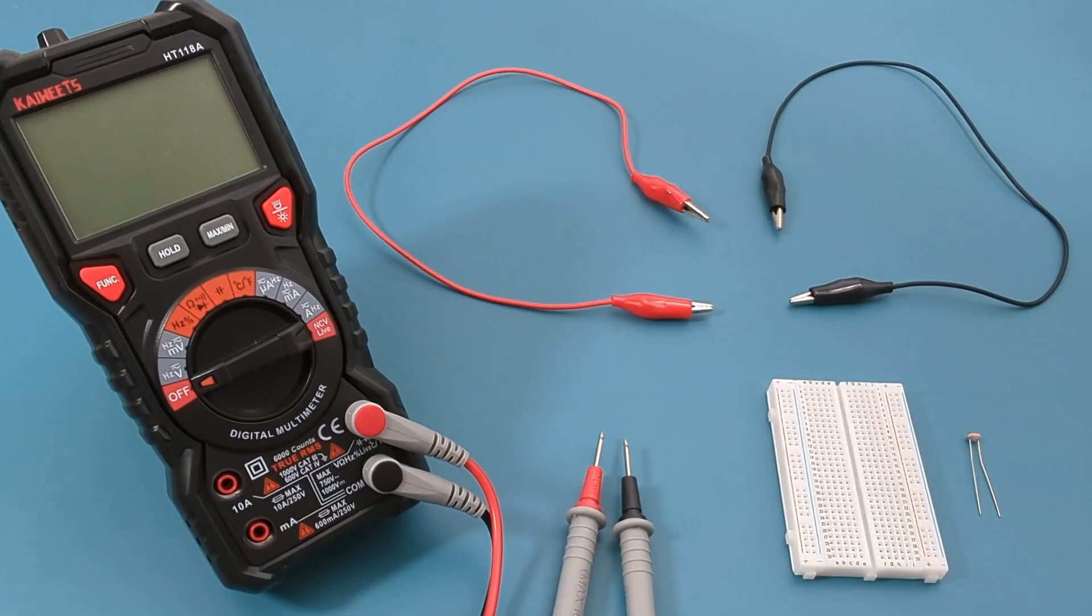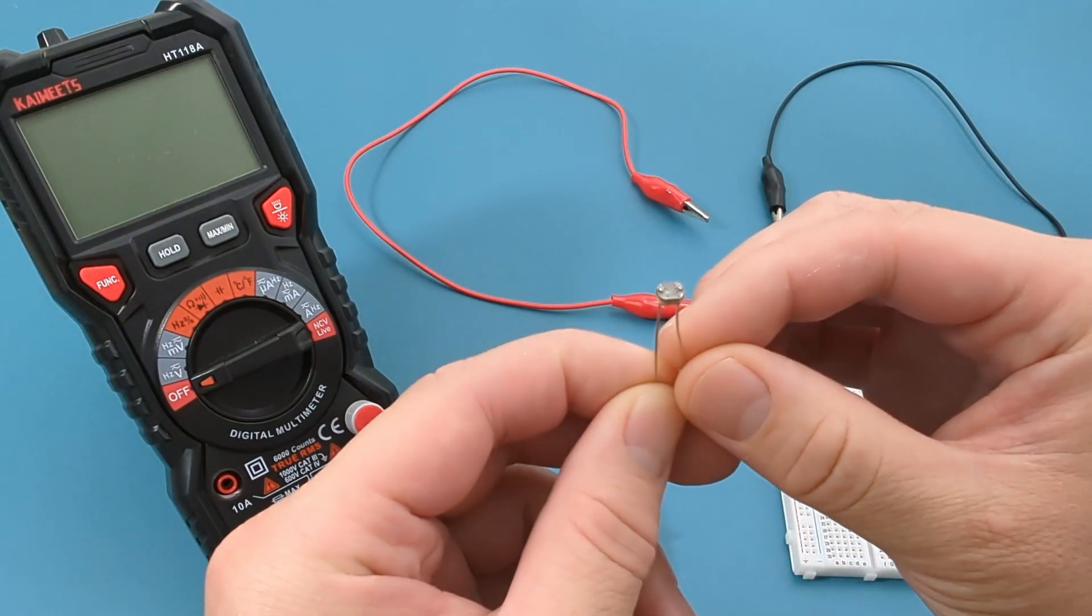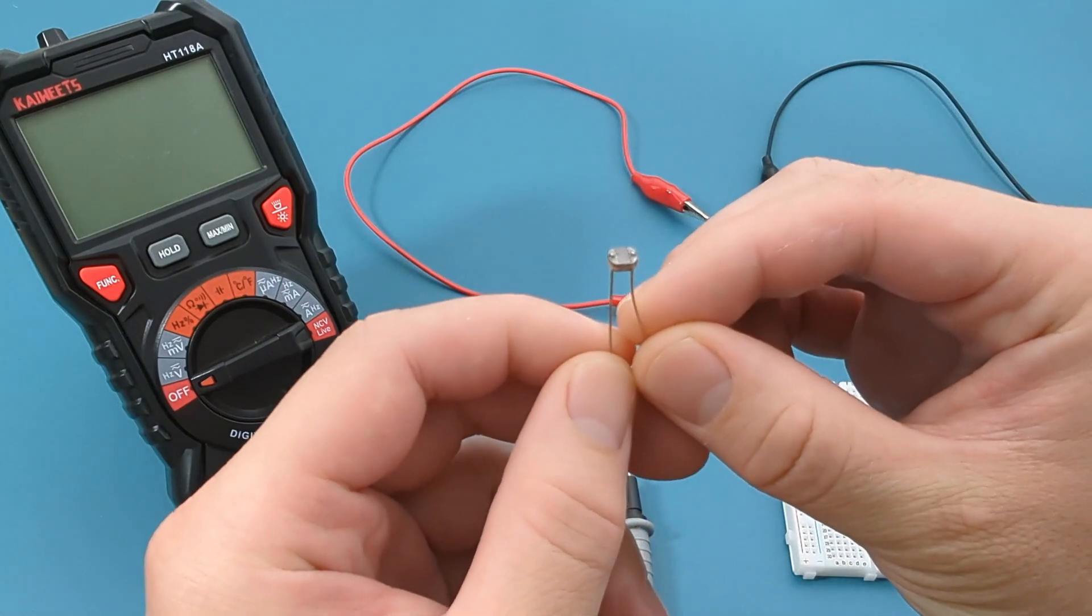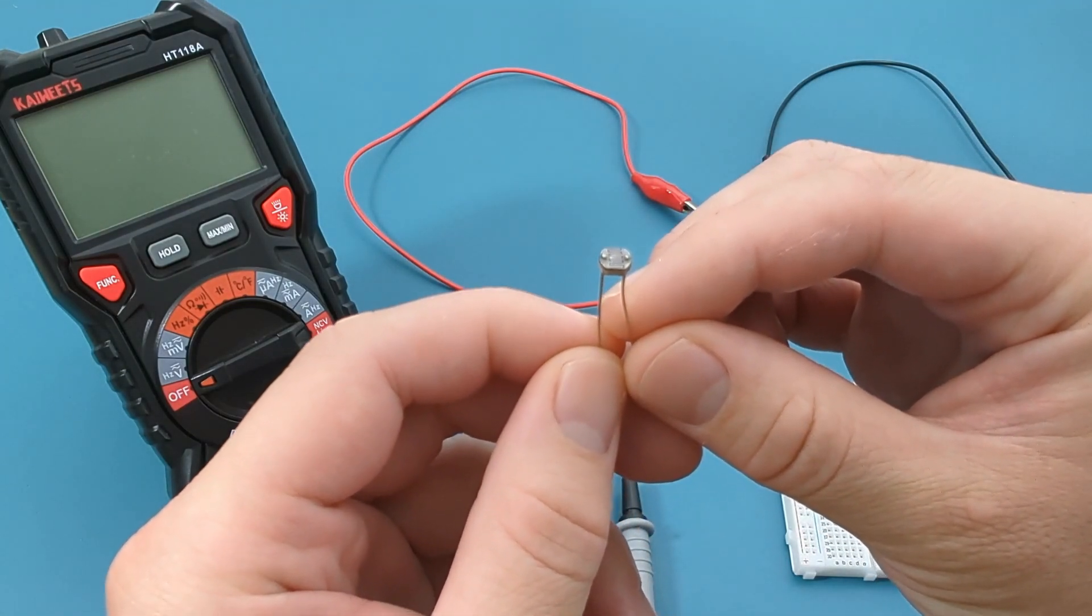Now it's time to test an LDR using a multimeter. This is the LDR. It's very tiny. I will test the resistance of this LDR. The resistance should vary based on the amount of light it receives.